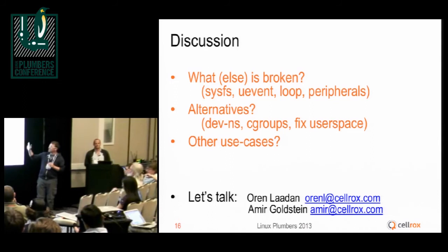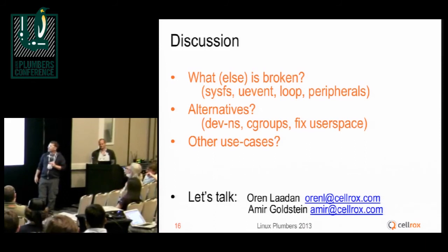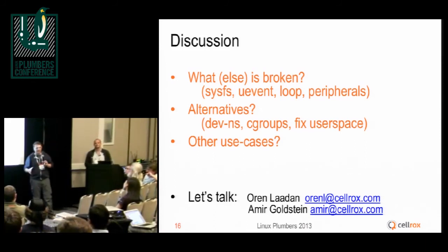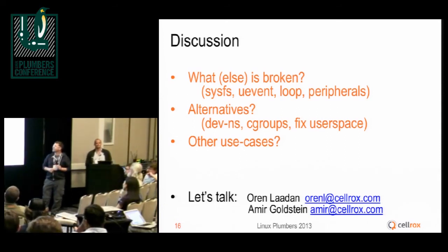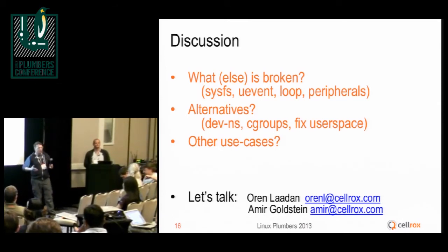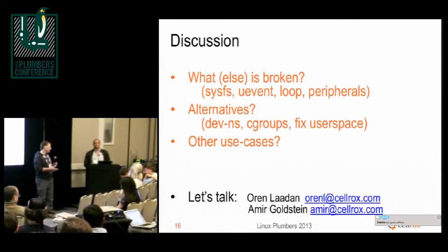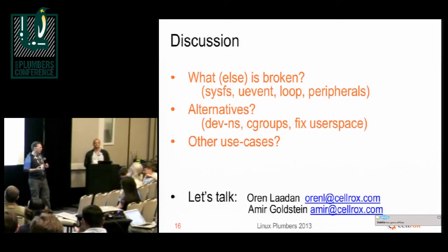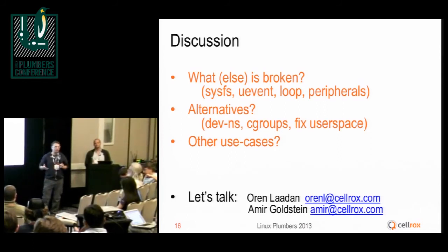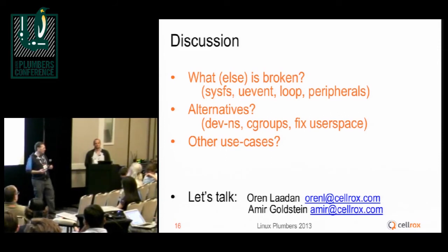What are the alternatives to fix those things that may be broken? There's the device namespace that we just presented. Device cgroups, to some extent, is used to address those issues. Some say fix userspace — you can either run a distribution inside a container, or you can run a modified distribution. What we've done is run mostly unmodified Android distribution. Some say the preferred way is to modify the distribution, but I'd like to open that for discussion. And of course, any other use cases for device namespaces — we'd be happy to hear about them.